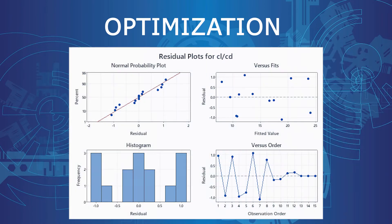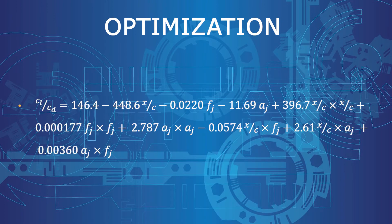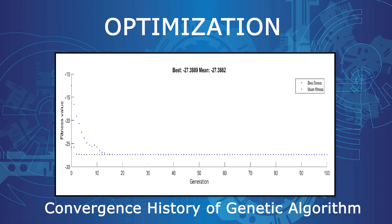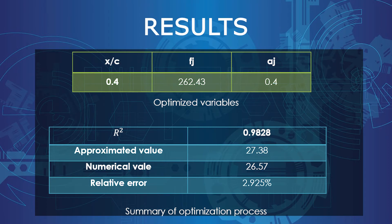After creating the dataset, Minitab software was used to analyze the data. The response equation of aerodynamic performance was obtained using the least-squares method. This is the three-dimensional plot of the effect of design variables on aerodynamic performance. Further optimization was done by minimizing the drag-to-lift ratio using a genetic algorithm. At 40% of the chord length, with actuation frequency of 262.43 Hz and injection velocity of 0.4, the maximum lift-to-drag ratio was predicted. The optimization model had an R-squared value of 0.98, indicating high accuracy.